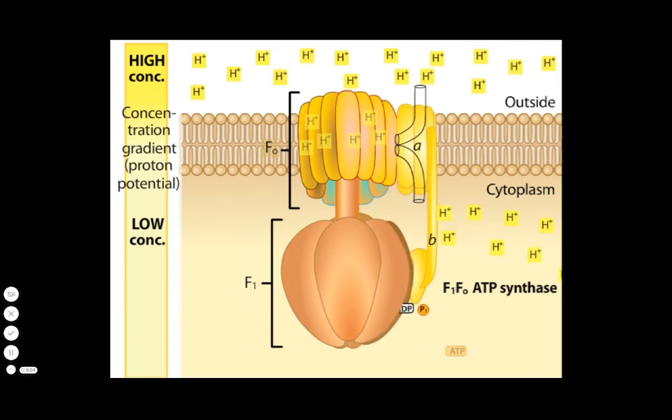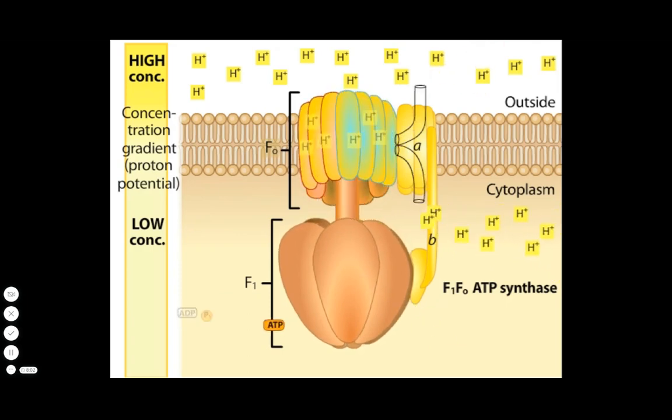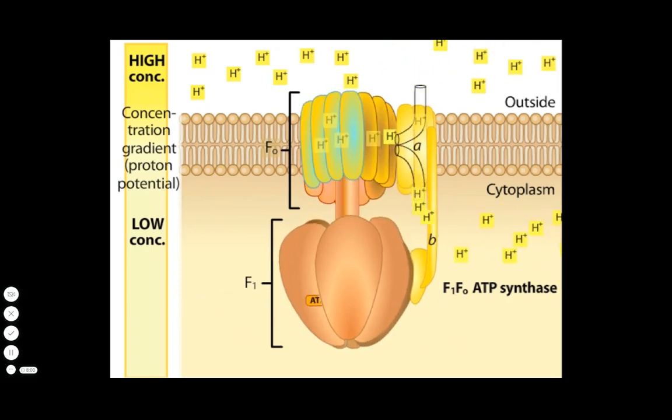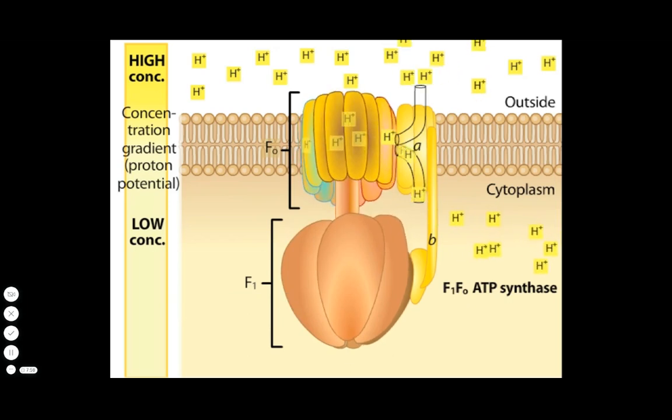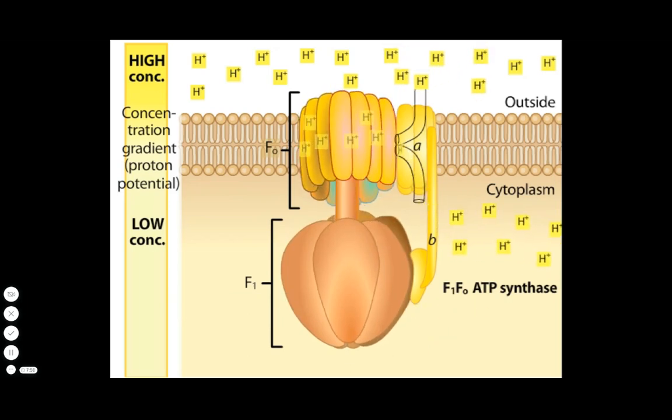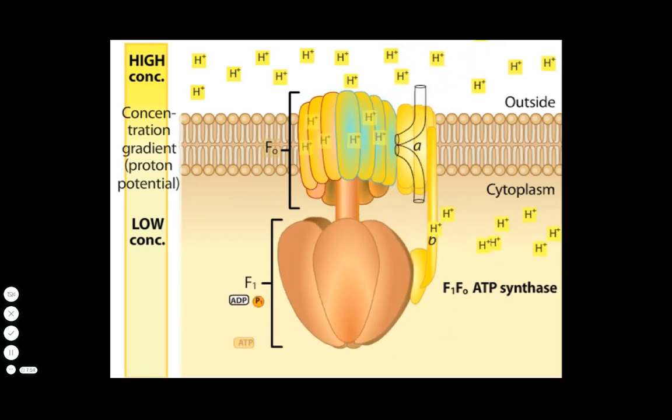ATP synthase complexes with the same general structure can be found in the cell membranes of bacteria, in the intermembranes of mitochondria, and in the thylakoid membranes of chloroplasts.